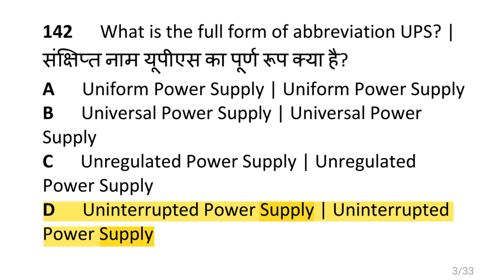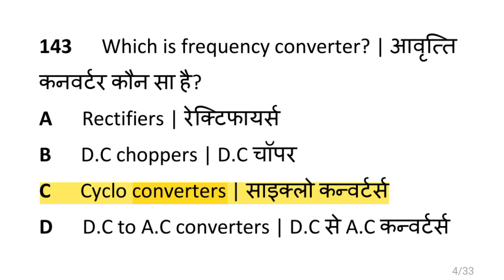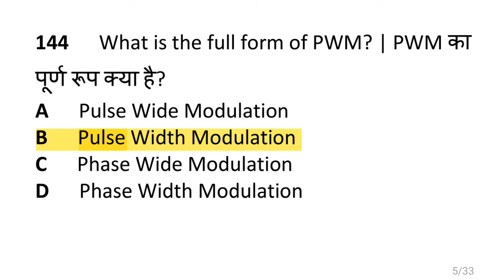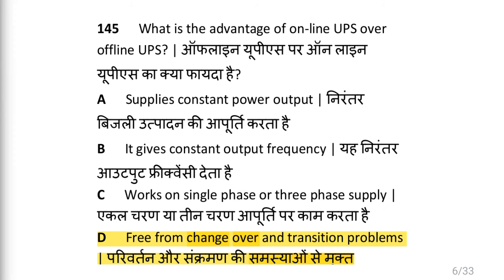What is the full form of abbreviation UPS? i.e. Uninterrupted Power Supply. Which is the frequency converter? i.e. cyclo converters. What is the full form of PWM? i.e. Pulse Width Modulation.